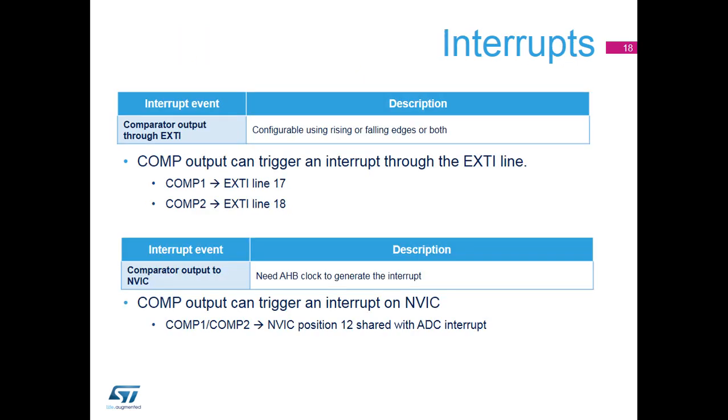The comparator can trigger an interrupt on the rising, falling, or both edges of the comparator output through the EXTI line. This is required to exit the stop modes. The output can also be connected to the CPU's nested vectored interrupt controller, also known as NVIC.